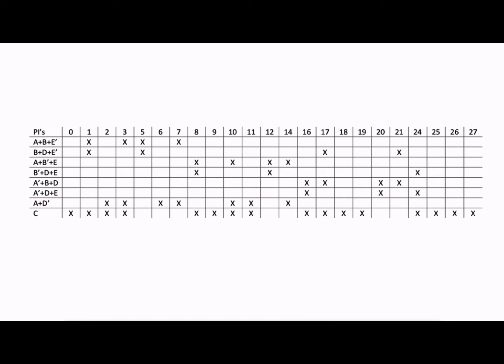So the first thing that we want to do anytime we get a prime implicant table is to determine which columns, in other words, which max terms are only covered by a single prime implicant. So I'm going to use my highlighter here to identify the columns or the max terms that only have a single prime implicant covering them. And that is going to lead us to our essential prime implicants. So I always start on the left-hand side. And what I found is that C is an essential prime implicant.